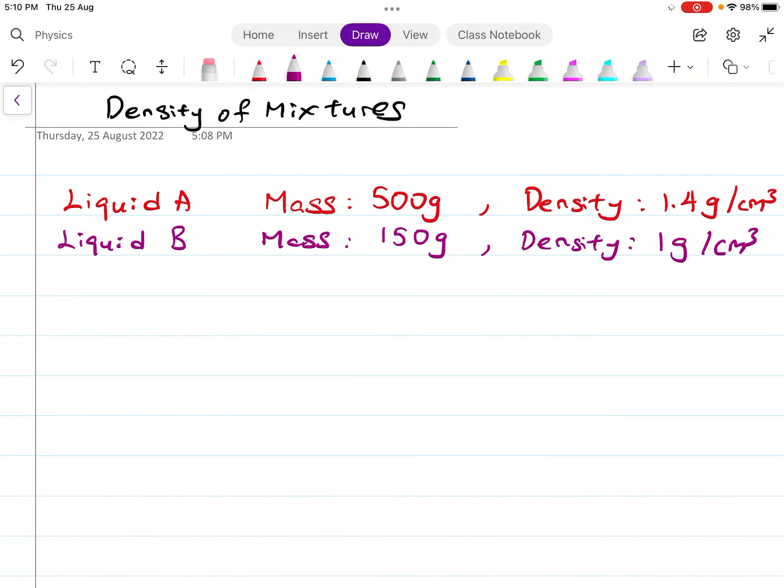Let's go through this question. We have liquid A with a mass of 500 grams and density of 1.4 grams per cm³. It's mixed with 150 grams of liquid B with density of 1 gram per cm³. Assuming there's no chemical reaction, what is the total volume of the mixture?